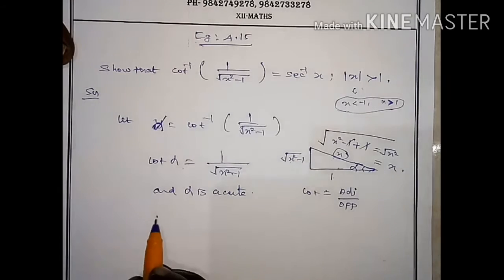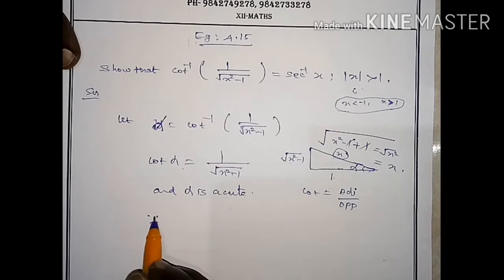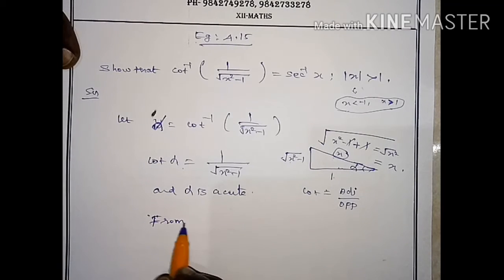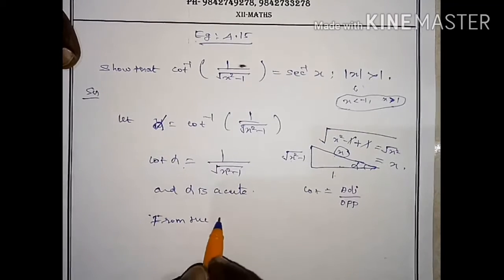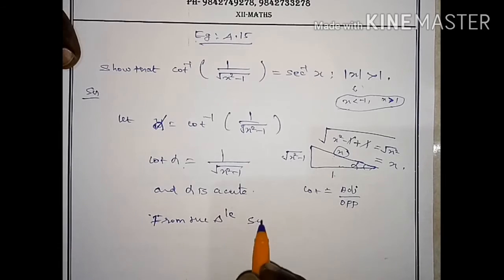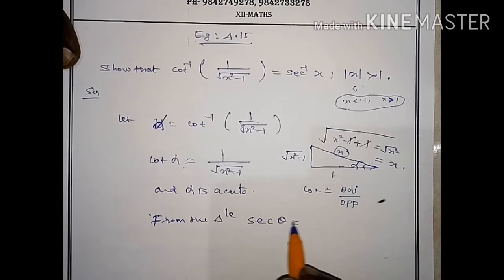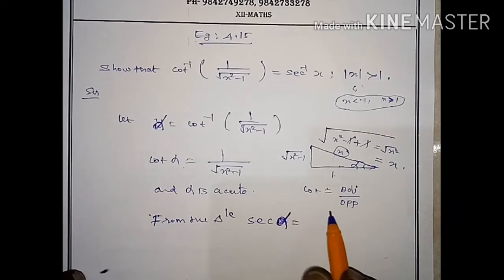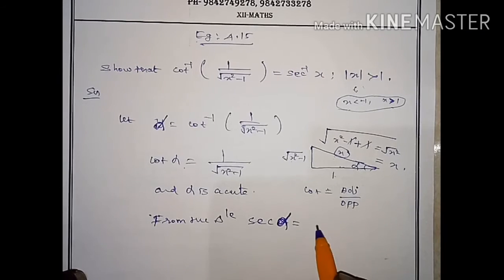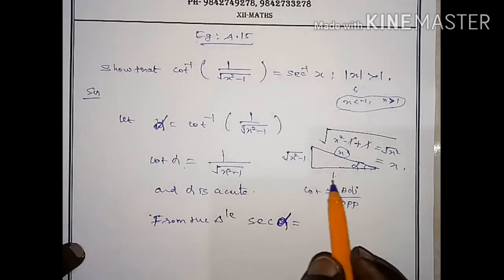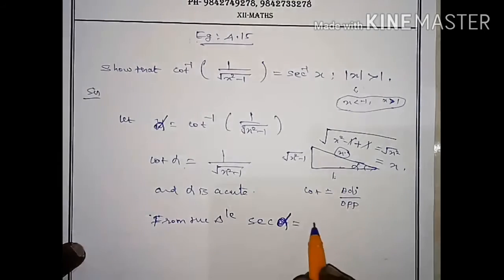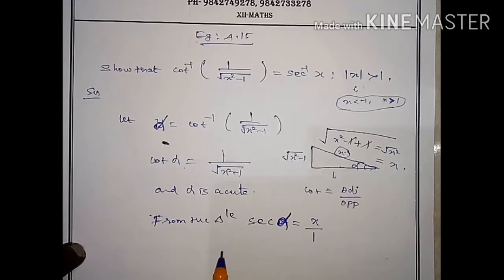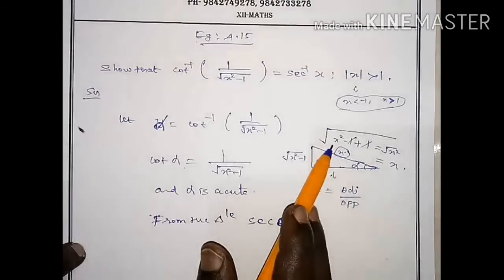From the triangle, secant theta equals secant alpha. Using the secant formula — hypotenuse by adjacent side — we look at hypotenuse over adjacent side.